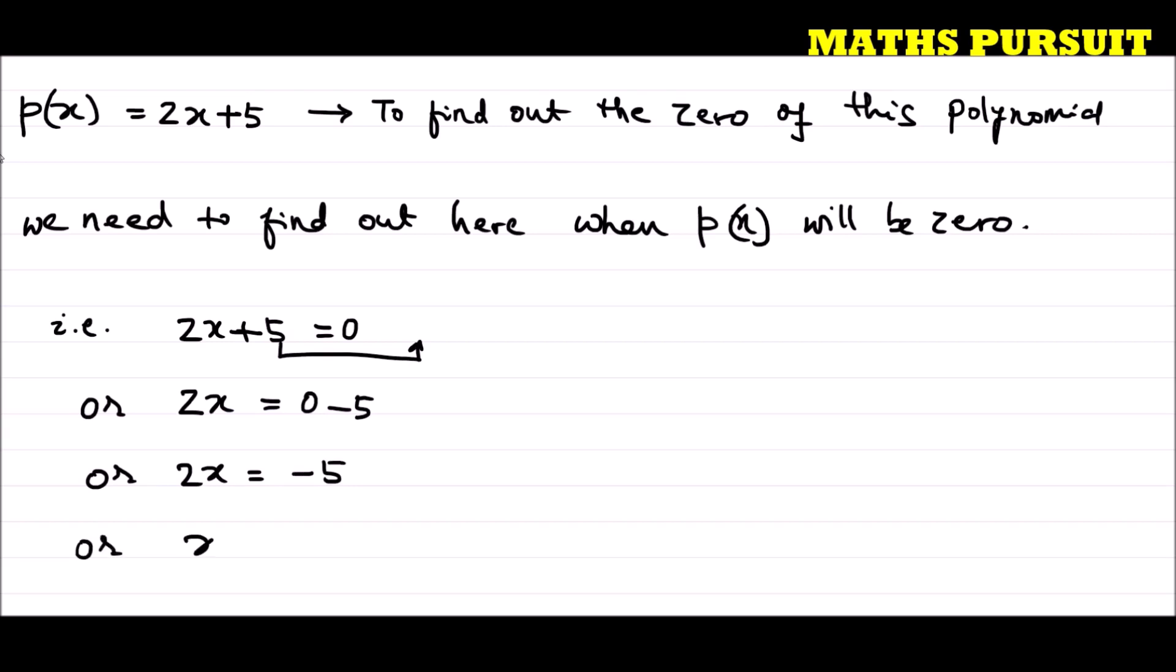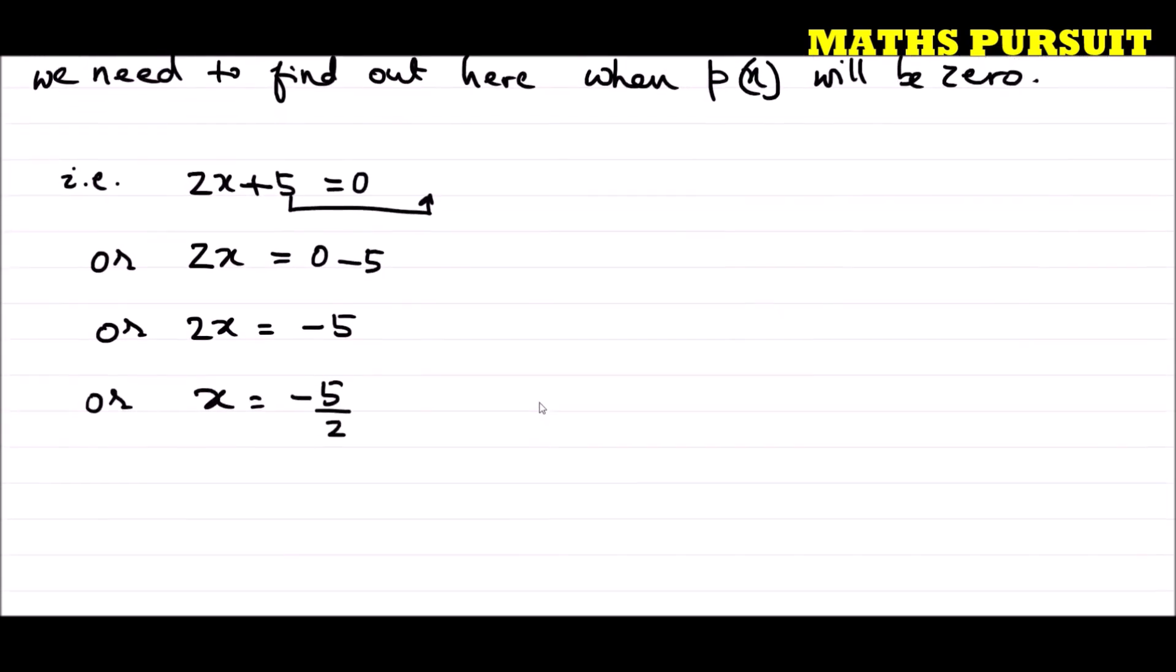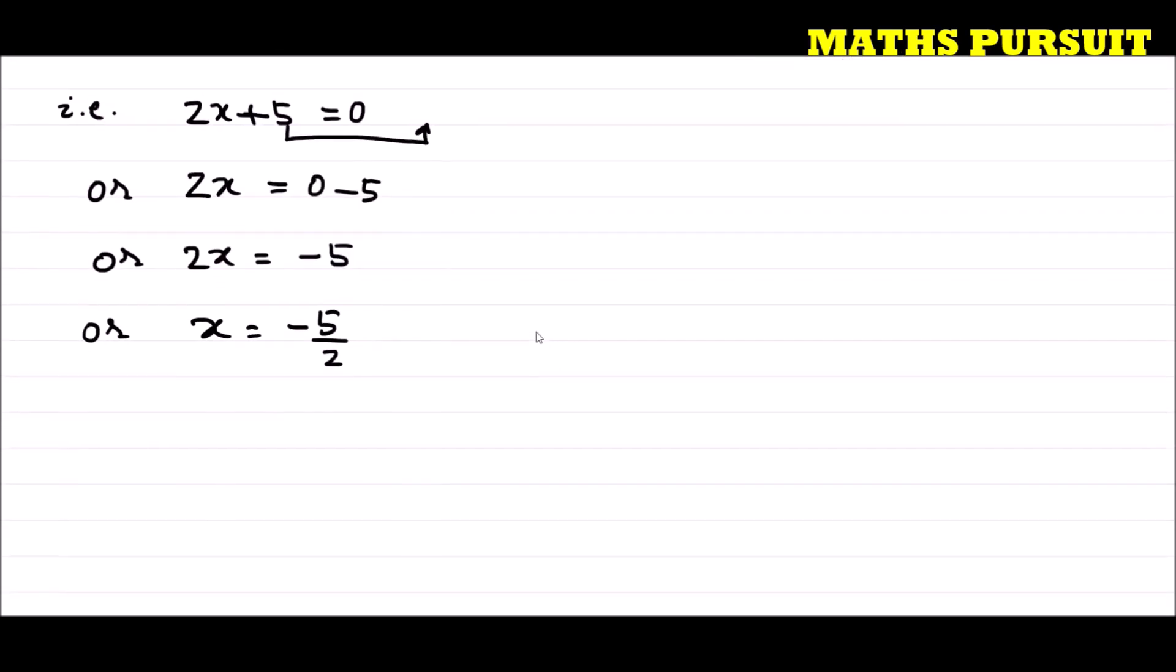So what we got, we got x = -5/2. And how it happened? Just I moved this 2 from the left hand side of the equation to the right hand side.